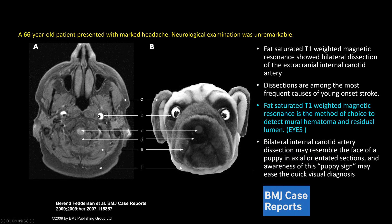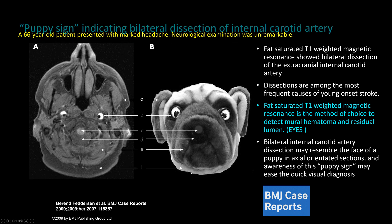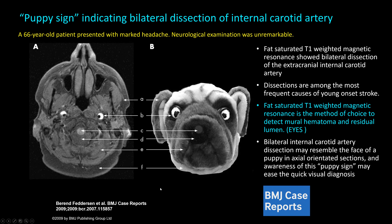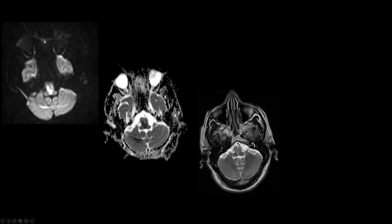This finding mimics the face of a dog or puppy sign. The residual lumen of the internal carotid artery and the mural hematoma together resemble the eyeballs of a puppy. The spinal cord resembles the nose, CSF resembles the hypointense areas around the nose, and muscles and soft tissues resemble the soft tissues of the face and subcutaneous fat. Remember the face of the dog or puppy sign for bilateral internal carotid artery dissection. This image is taken from Beren Federson et al., BMJ Case Reports, with permission.